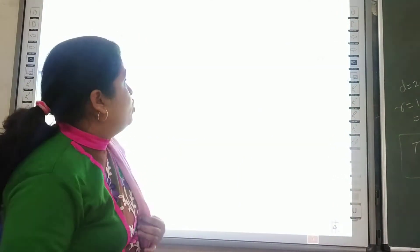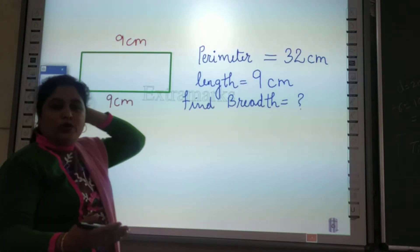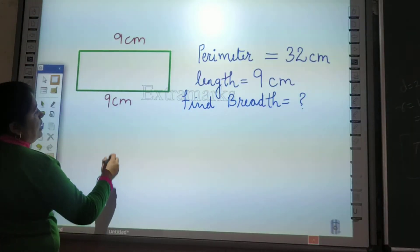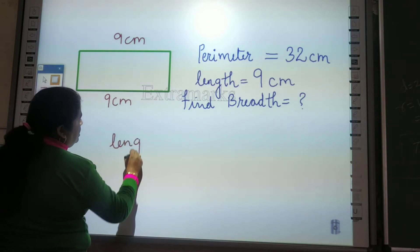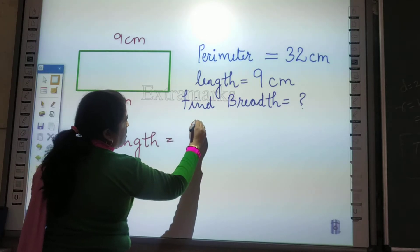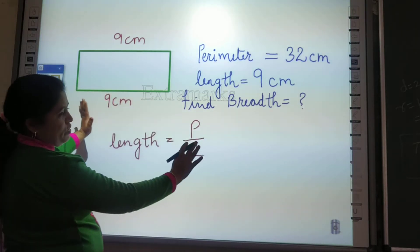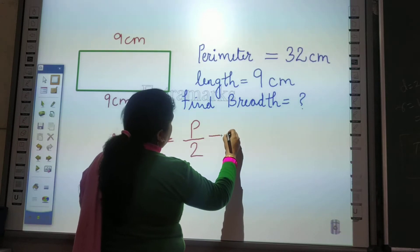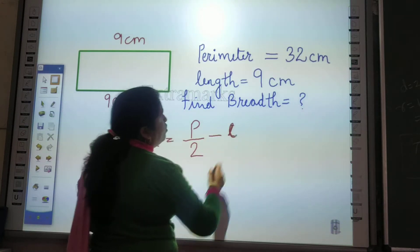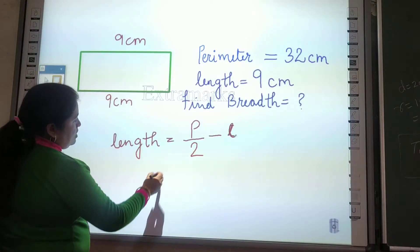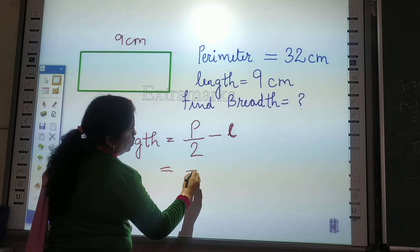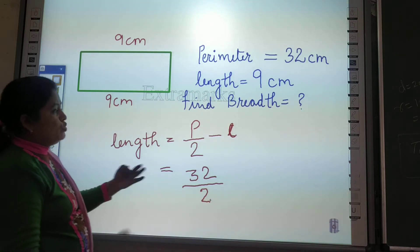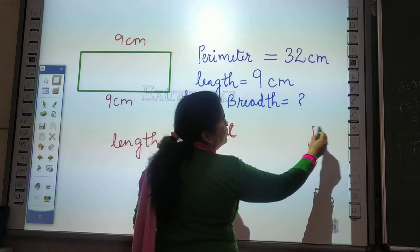But here we have 2 equal sides to find. For this, children, you need to remember a formula — when you go to class 7 you will learn it more easily, but for now here is the formula. To find the missing length or breadth in a rectangle: first, perimeter divided by 2. Then subtract the known value from it. If length is given, subtract length. If breadth is given, subtract breadth. So: 32 divided by 2 equals 16.